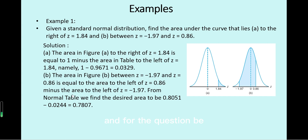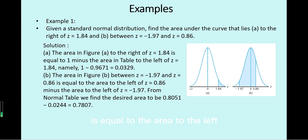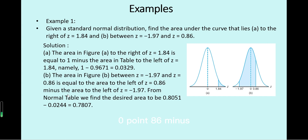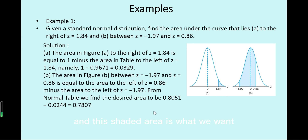For question (b), find the area between z1 = -1.97 and z2 = 0.86. This equals the cumulative probability to the left of z = 0.86 minus the cumulative probability of z = -1.97. The result is approximately 0.7807.